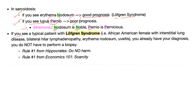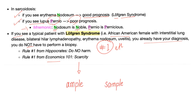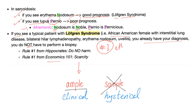If you see a typical patient with Löfgren syndrome — African-American female with interstitial lung disease, bilateral hilar lymphadenopathy, and erythema nodosum — you already have your diagnosis and do not need to perform a lung biopsy. Rule number one, according to Hippocrates: do no harm. If you already have your diagnosis, you've got it. From medical ethics and economics: why biopsy this patient when others can benefit? If the diagnosis is ample, there is no need to take a sample.